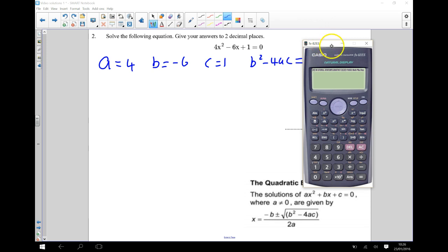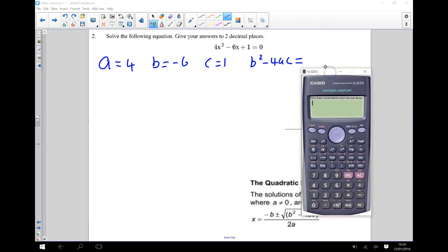Okay so b squared take away 4ac is going to be a negative 6 squared. So remember when I put this into my calculator because it's a negative number I'm going to put it into brackets, negative 6 squared. So that's negative 6 squared, b squared, take away 4 times a times c.